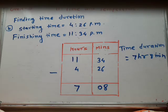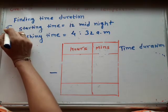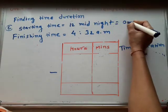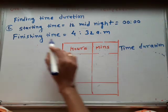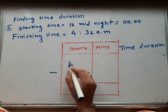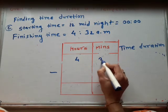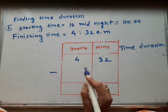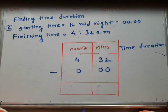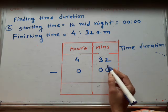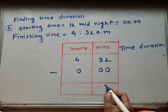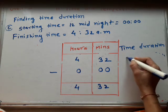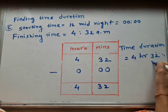Now C number example. Starting time is 12 midnight. And 12 midnight means 00 hours. And finishing time is 4 hours 32 minutes. So we write the finishing time first: 4 hours, 32 minutes. Minus midnight time — we convert midnight to 0 hours 0 minutes. So 32 minus 0 gives us 32, and 4 minus 0 gives us 4. Time duration is 4 hours 32 minutes.